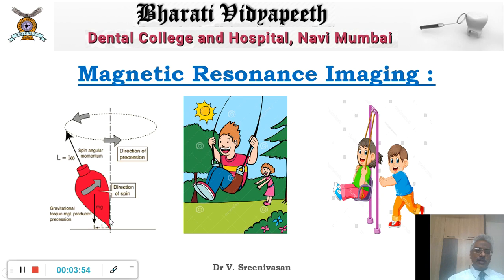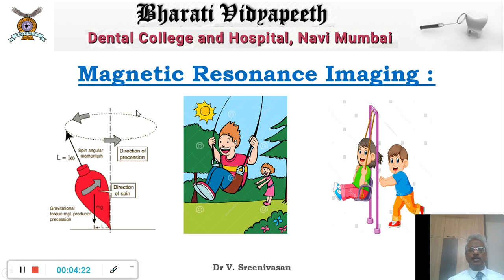This spinning proton is also precessing. If you manage to tap it with your radio frequency exactly as it is moving along this direction, you will make it precess a little more. If you hit the frequency as it is coming back, you will obstruct it and make it precess a little less. So if your frequency is matched with that of the precession, you can make it more and more horizontal — very similar to how you push a swing.